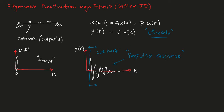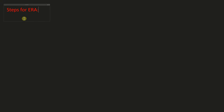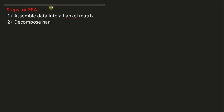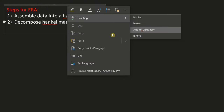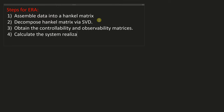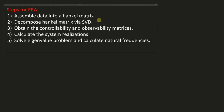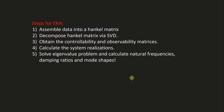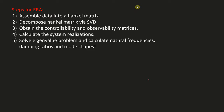The steps necessary for the Eigenvalue Realization Algorithm are as follows: we're going to assemble the data into a Hankel matrix; we're going to decompose the Hankel matrix via Singular Value Decomposition; we have to obtain the controllability and observability matrices; we have to calculate the system realizations — the A, B, C, D matrices discussed earlier; and lastly we solve eigenvalue problems and calculate natural frequencies, damping ratios, and mode shapes, which are really what we're interested in for system ID.